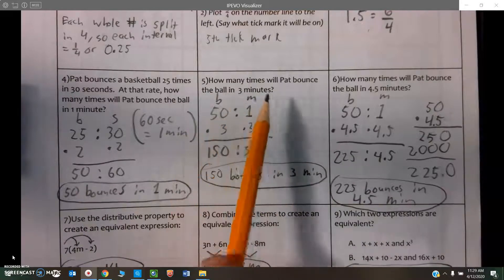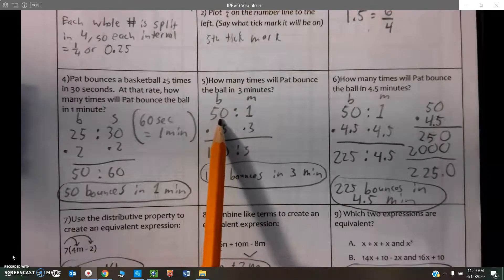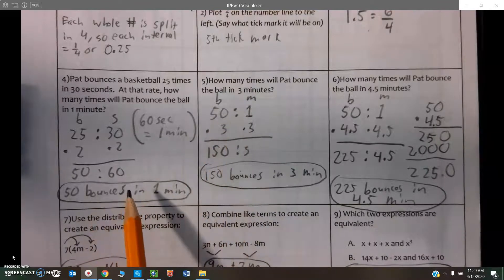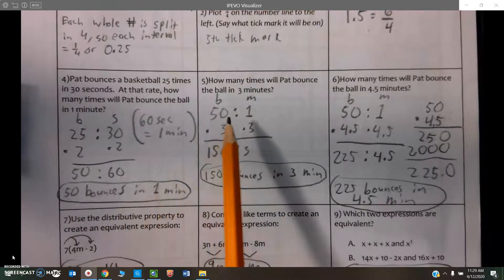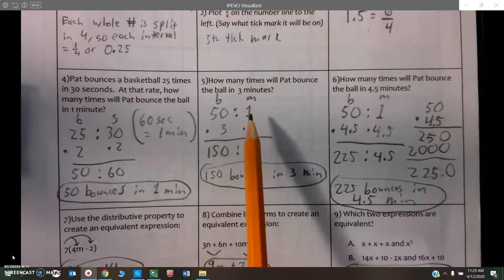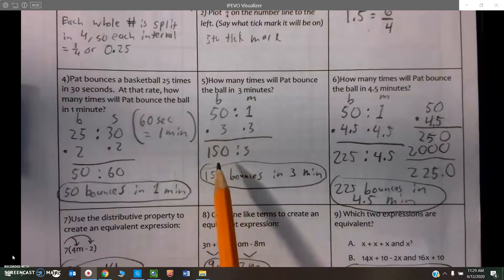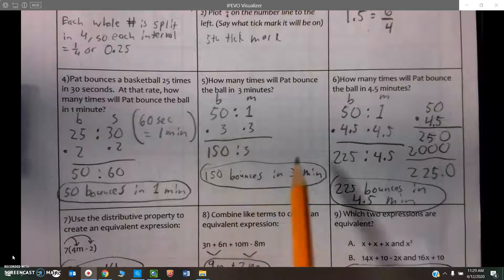How much would he bounce in three minutes? Well, I just found that he does 50 bounces in one minute, so then I'm taking that and using that ratio over here. And I have to multiply both by 3 to find 150 in three minutes.